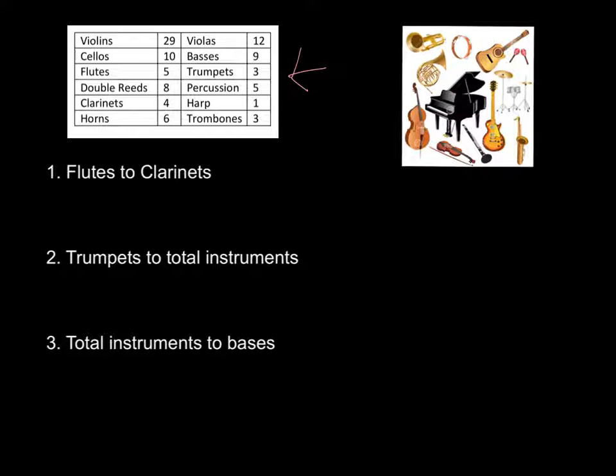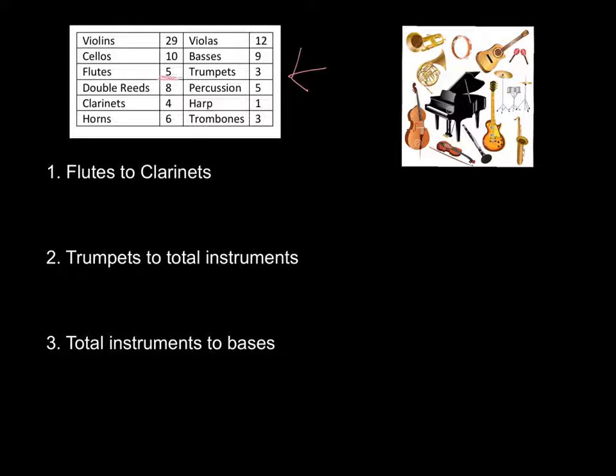If I'm going to write a ratio of flutes to clarinets, I need to make sure that when I put my ratio down I have flutes number first. These are not able to do the commutative property. They have to be in order. The number of flutes are 5. Here's where I'm getting my information. So we would say 5 to clarinets, 4.